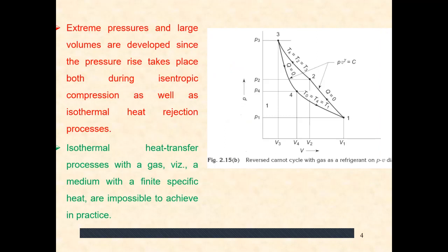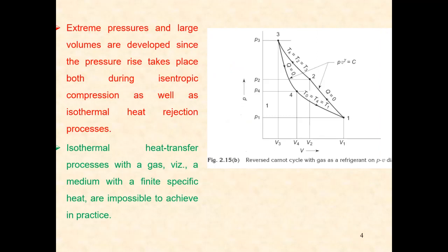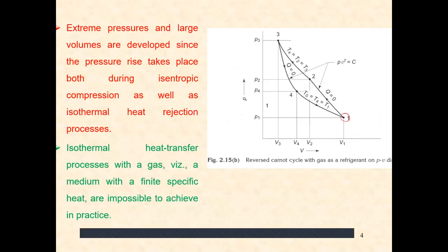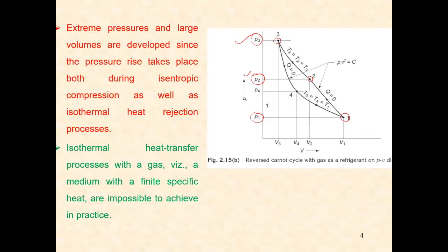Extreme pressures and large volumes are developed since the pressure rise takes place both during isentropic compression as well as the isothermal heat rejection process. During process 1 to 2, the reversible adiabatic compression, pressure is increasing from P1 to P2. Similarly, during the isothermal heat rejection process 2 to 3, pressure also increases from P2 to P3. So basically, both during the constant temperature process and the reversible adiabatic compression process, pressure increases from P1 to P2 and from P2 to P3.